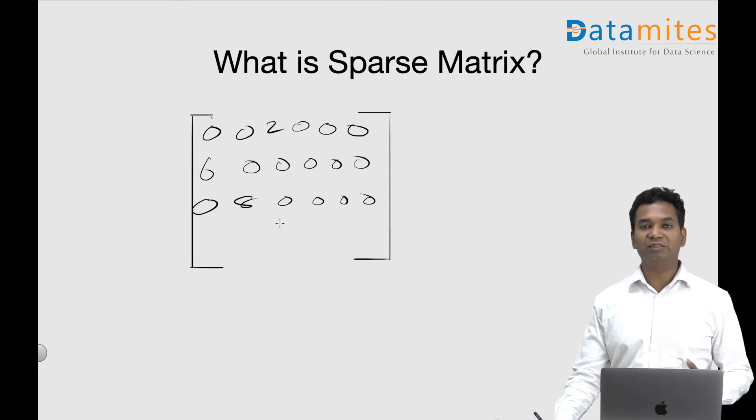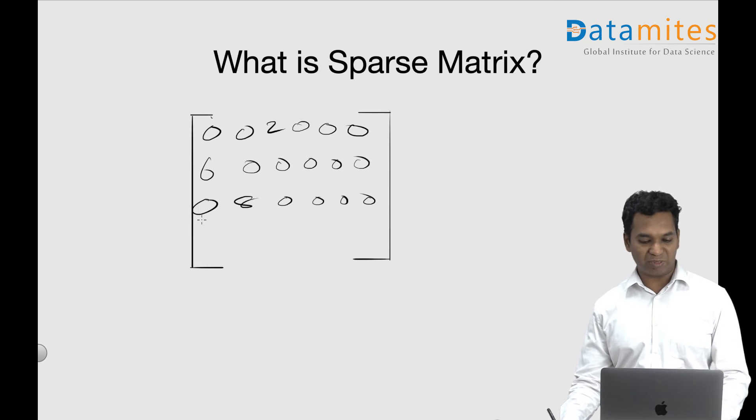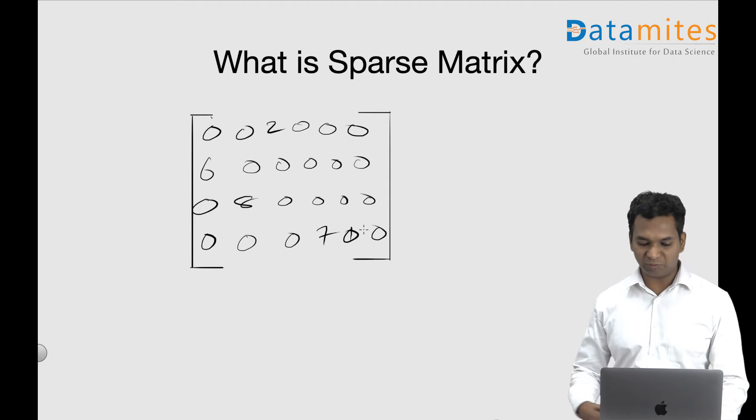When you do NLP techniques like bag of words, you end up getting sparse matrix. So they are typically very big, huge, something like this.